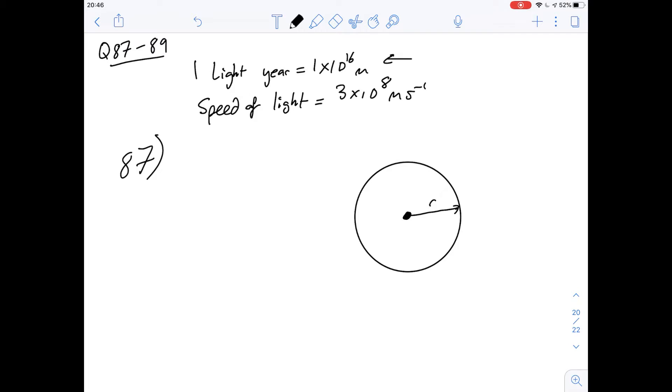So this is a question about radio transmission and we're told that there's this bubble that's formed as signals are radiated out from the earth. We're given these two figures, one for light year and one for the speed of light and we'll come back to those in a minute.